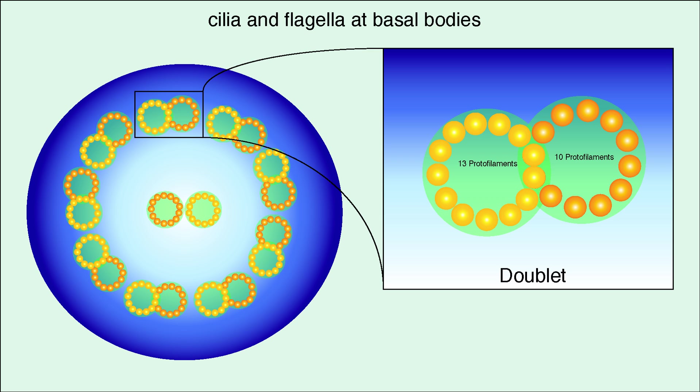Then nine of these doublets come together to form a ring surrounding two more microtubules, each with 13 protofilaments. Once the basal body has established this 9 plus 2 structure, it can extend to create cilia and flagella.